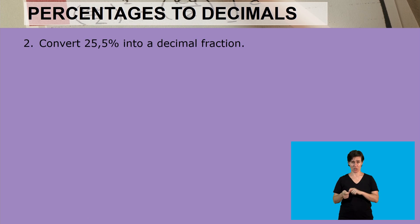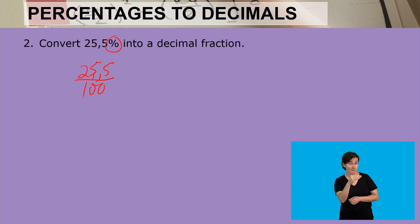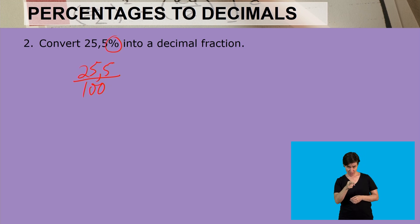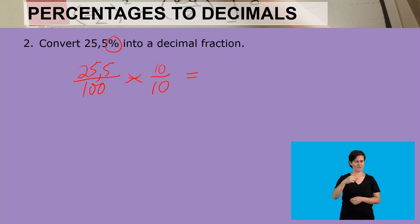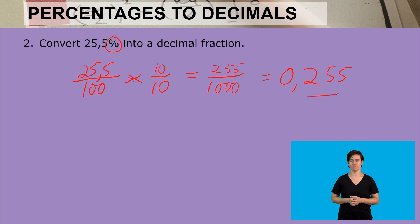The second example: convert 25.5% into a decimal fraction. Again, we recognize that 25.5, because of that percentage sign, is divided by a hundred. Now, because there is a comma, we can eliminate it by multiplying by ten divided by ten to make it a whole number. So 25.5 multiplied by ten becomes 255, and 100 multiplied by ten becomes a thousand. Writing that as a decimal then is 0.255. That is our decimal fraction.